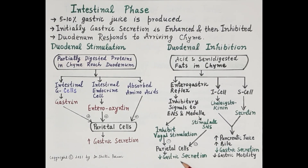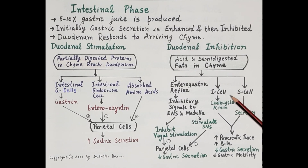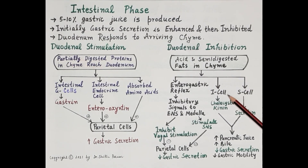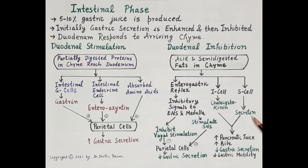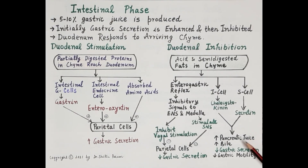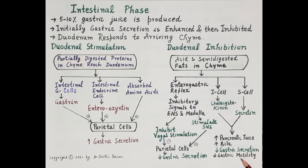Inhibition of vagal stimulation and stimulation of sympathetic nervous system both inhibit the parietal cells, reducing the secretion of gastric juice. Additionally, chyme stimulates duodenal I cells to produce cholecystokinin (CCK), and intestinal S cells to produce secretin. These two hormones increase the release of pancreatic juice and bile, but suppress the secretion of gastric juice and gastric motility. Overall, gastric secretion declines. This concludes the phases of secretion of gastric juice.